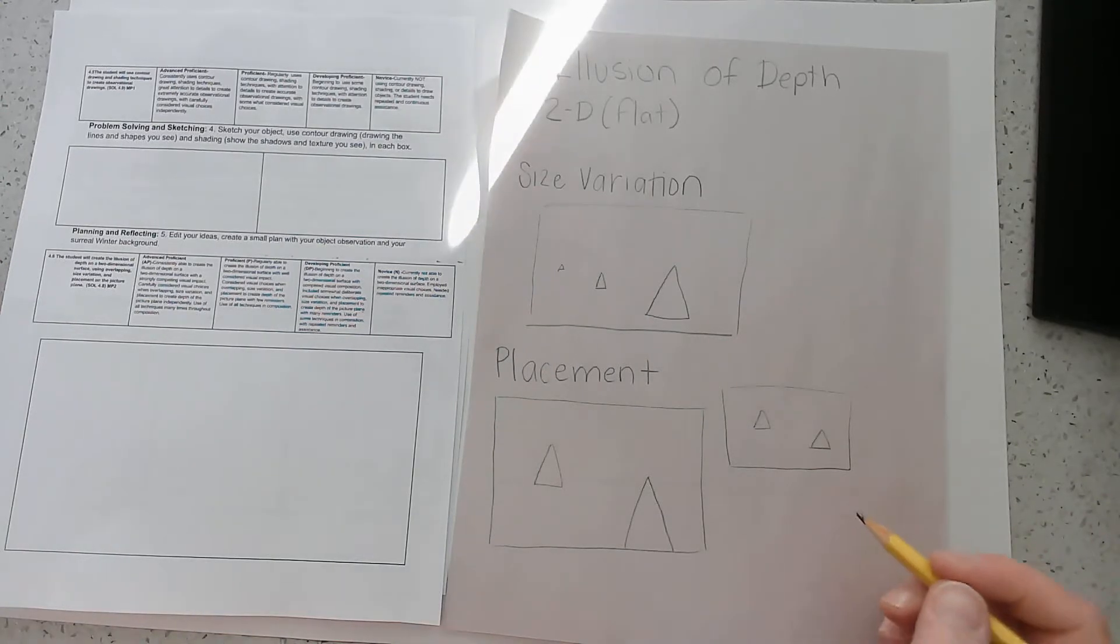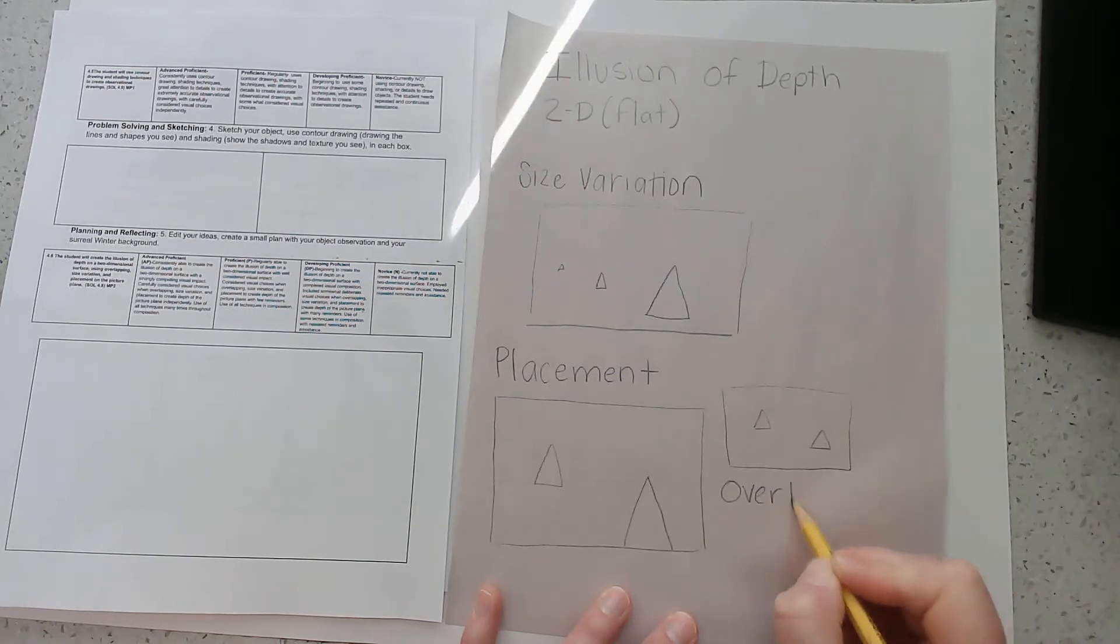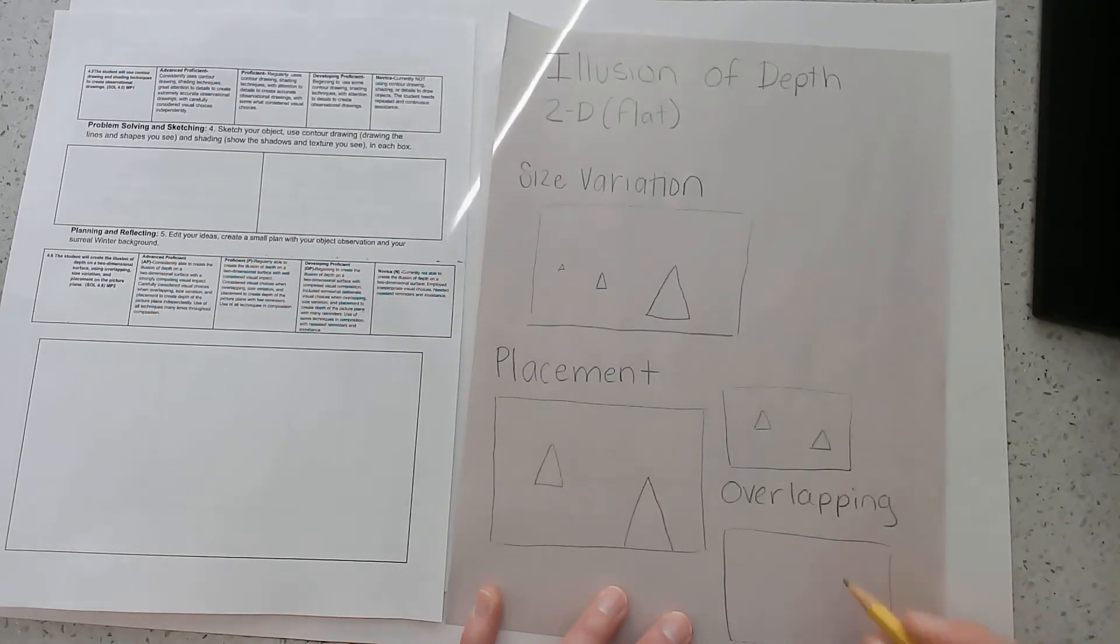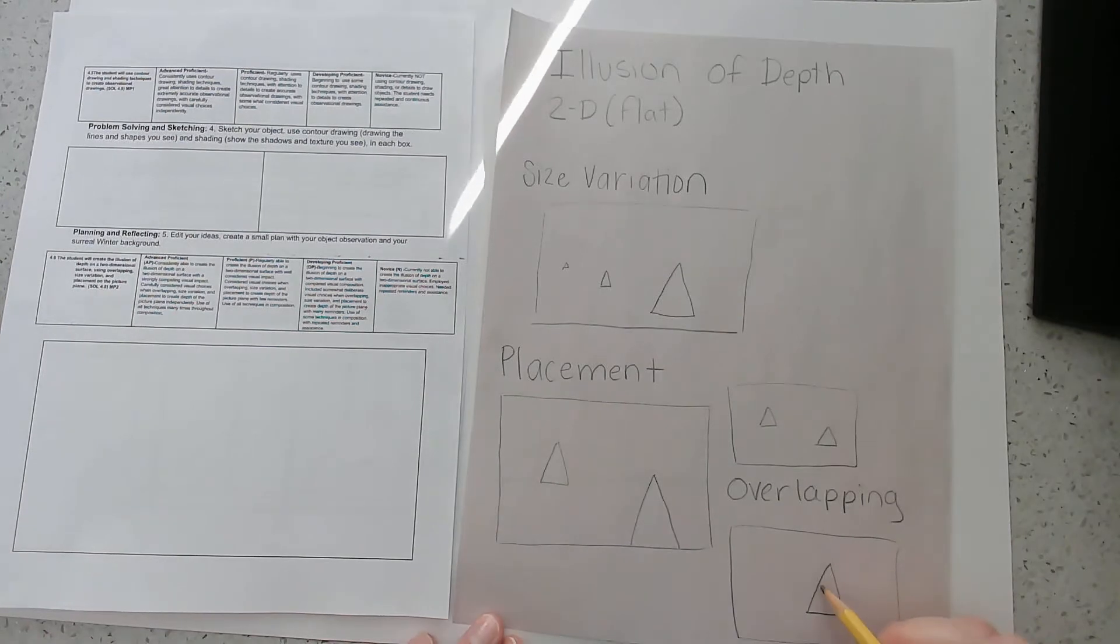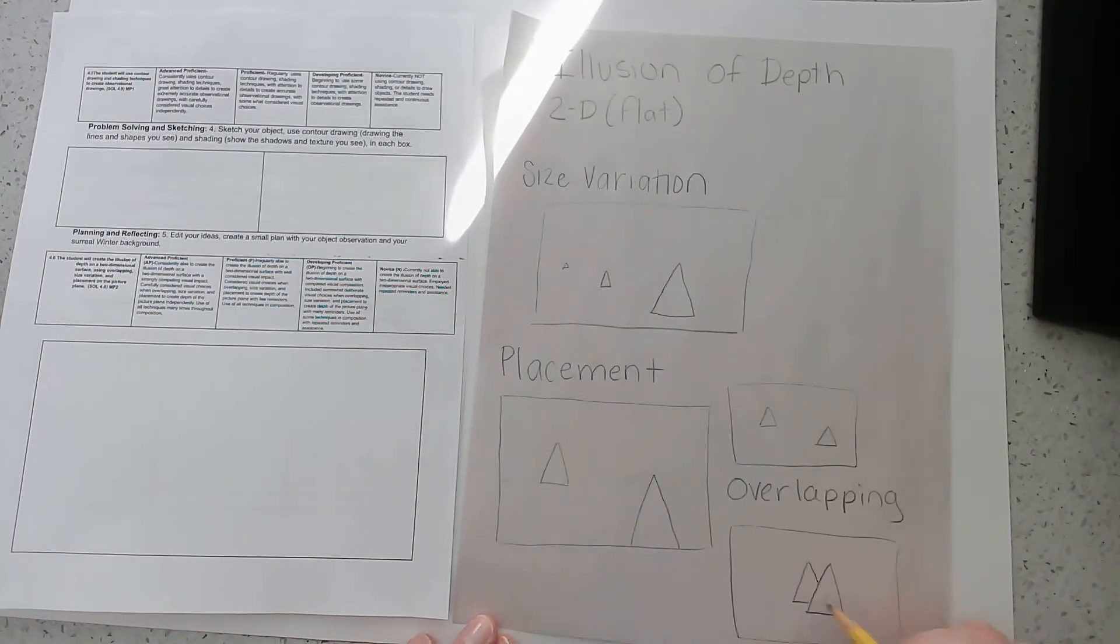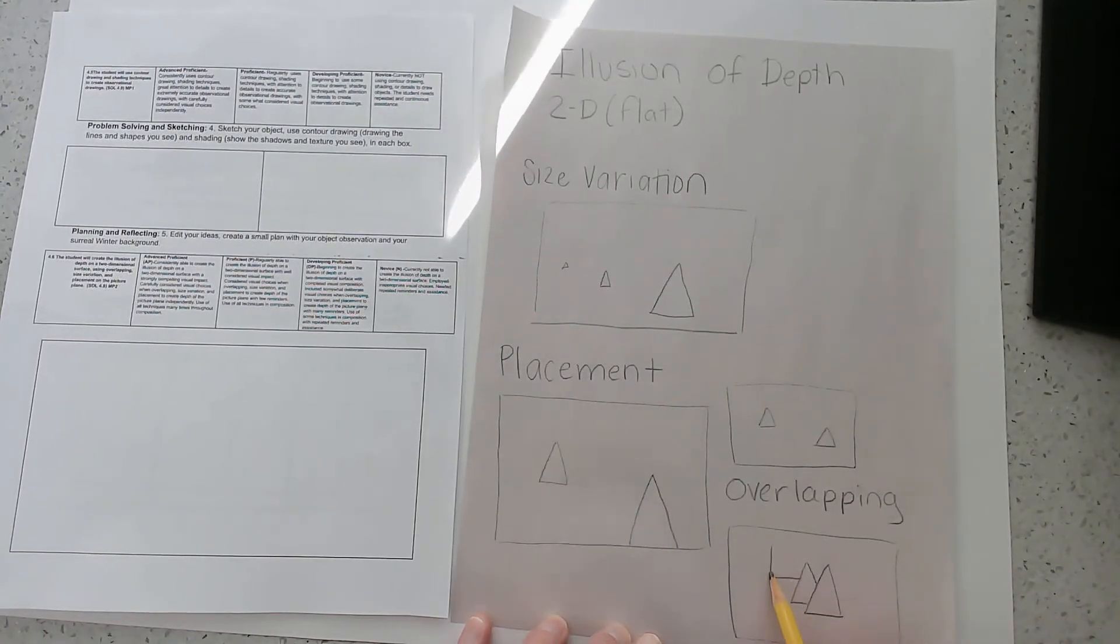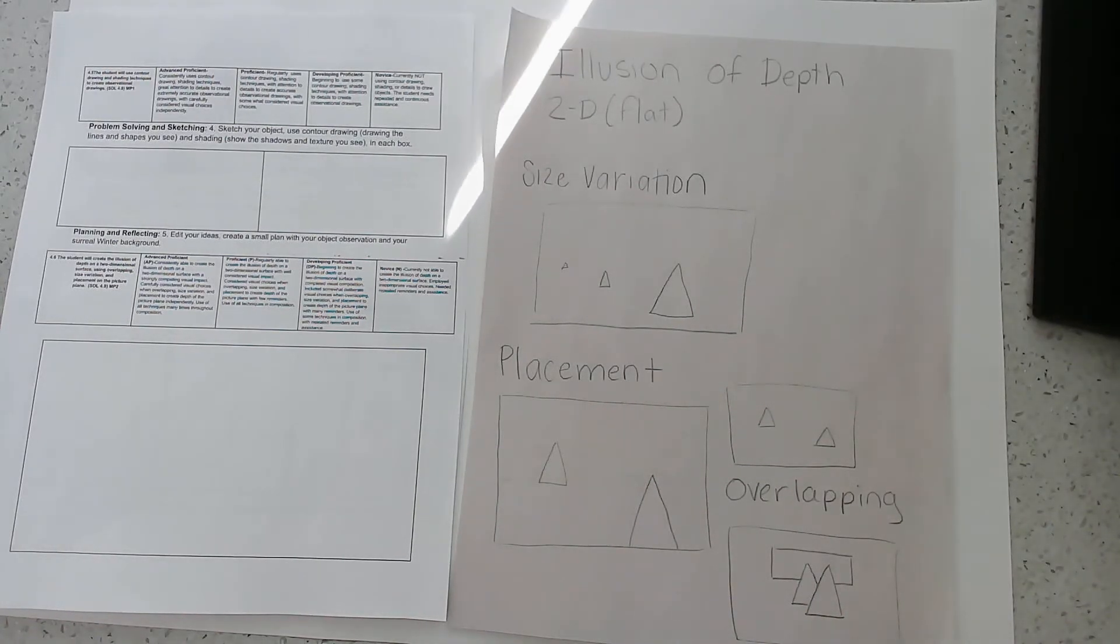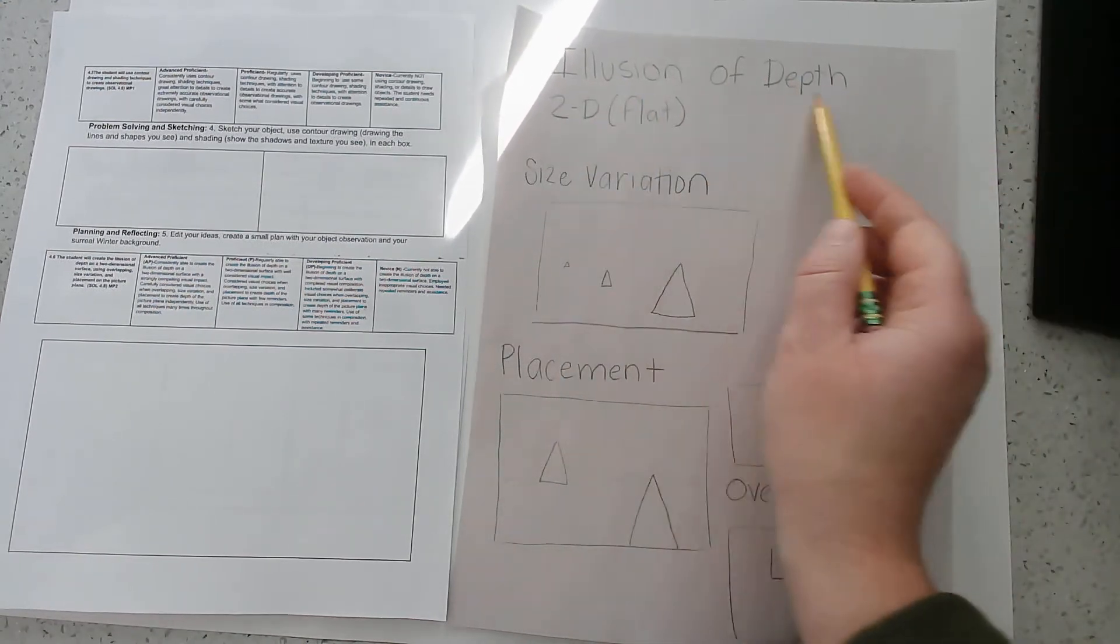And the last thing we're going to make sure that we see in our picture plane is overlapping. So that's where something looks like it's in front of something else. For example, if I had a triangle here and I wanted to make it look like it was in front of another triangle, I would only draw part of that other triangle. So this one looks like it's in front. Or you could take that a step further, and I could put a rectangle back here. The rectangle looks like it's behind these two triangles. So you only draw part of the thing that it is in front of. I'll be looking for you to use all three of these techniques to create the illusion of depth in your artwork.